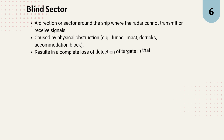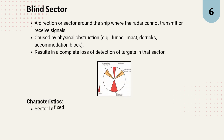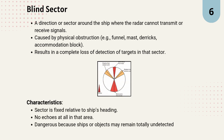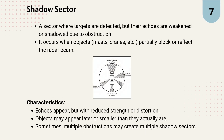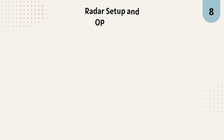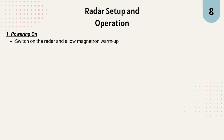Now, let's look at blind and shadow sectors. A blind sector is an area completely blocked by ship structures like funnels, masts, or accommodation blocks — targets in this sector are invisible, which is dangerous. A shadow sector is partially blocked; targets appear, but their echoes are weak, delayed, or distorted. Multiple obstructions can create several shadow sectors.